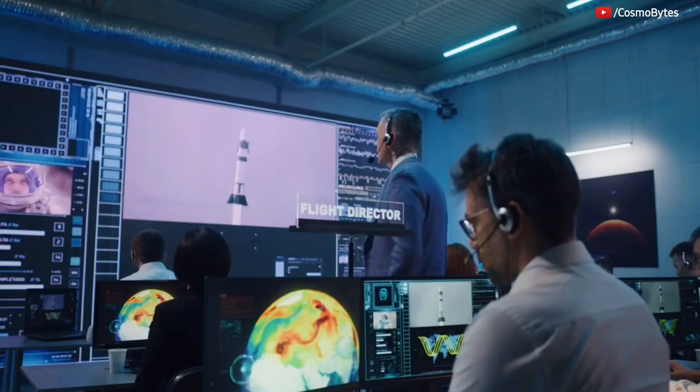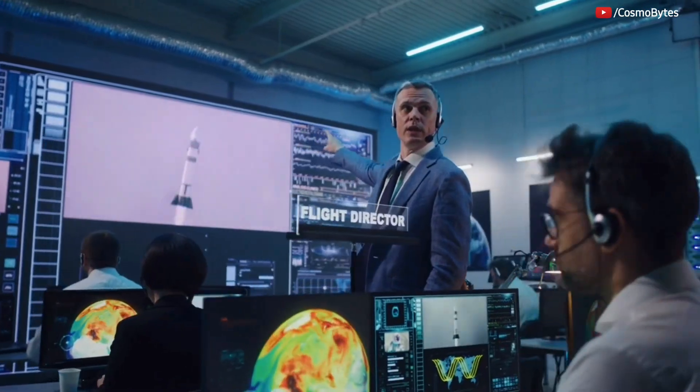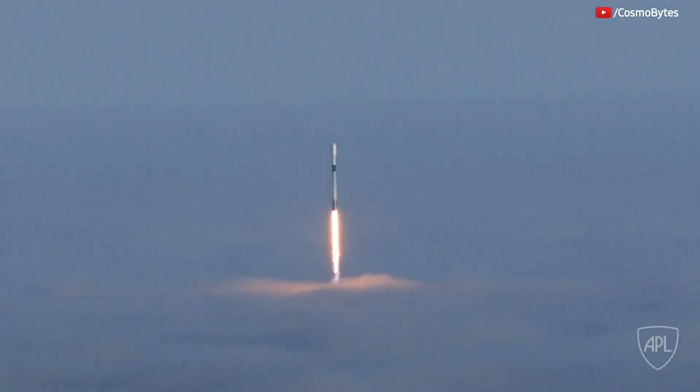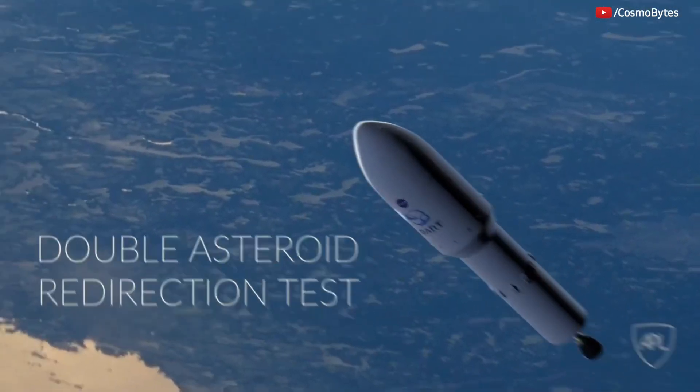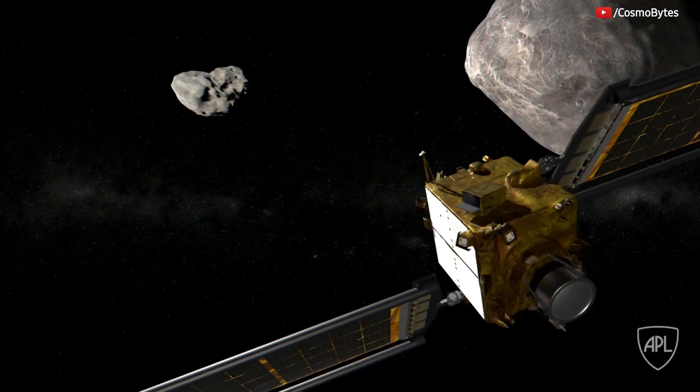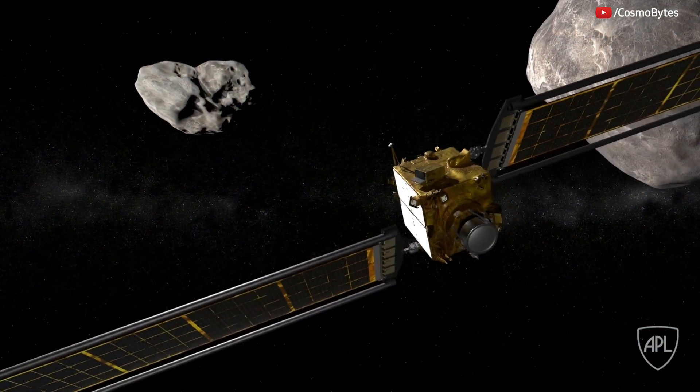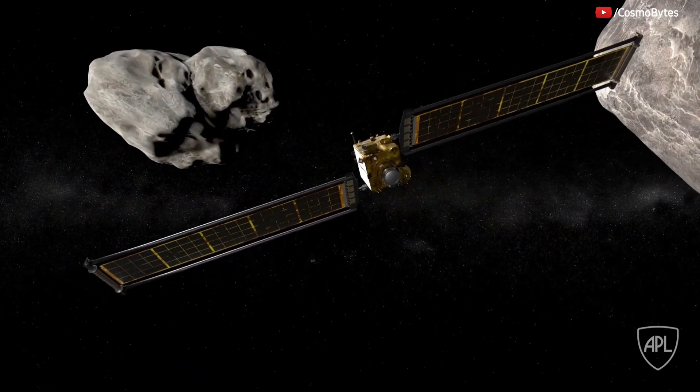In November 2021, NASA launched a spacecraft called the Double Asteroid Redirection Test, DART, which will collide head-on into the 525-foot-wide, 160-meter, Dimorphos asteroid in autumn 2022.